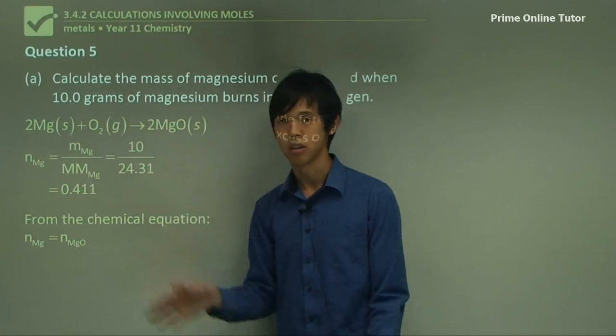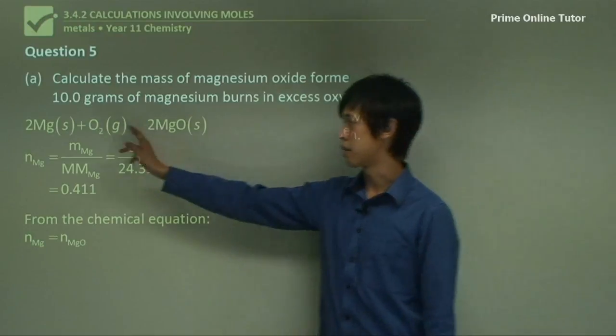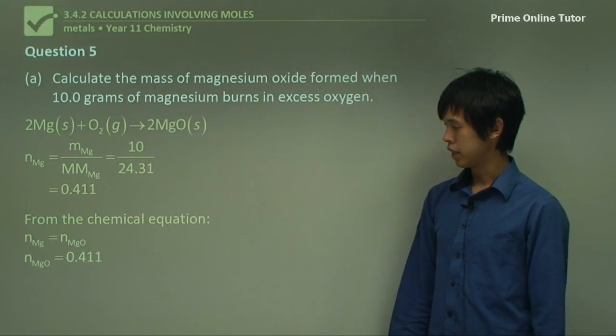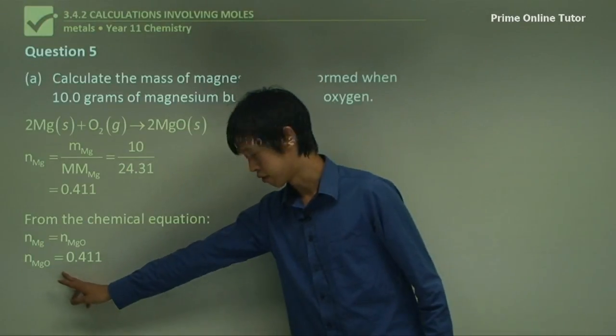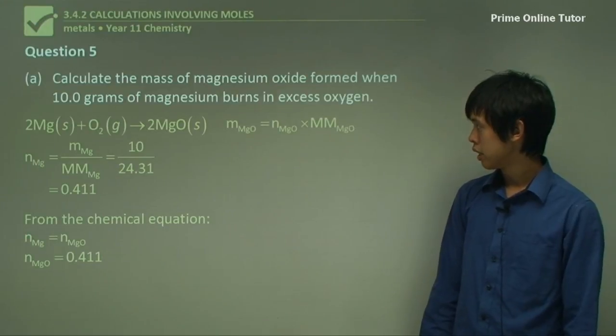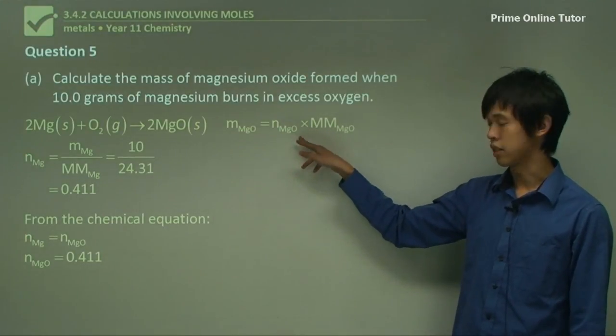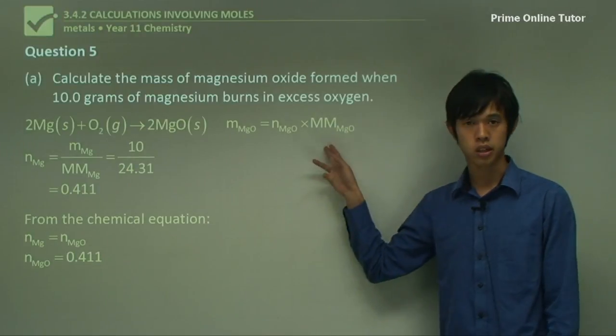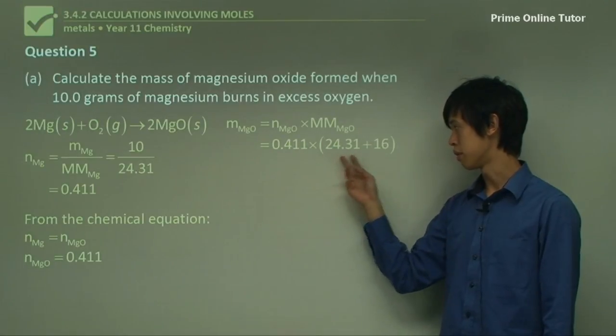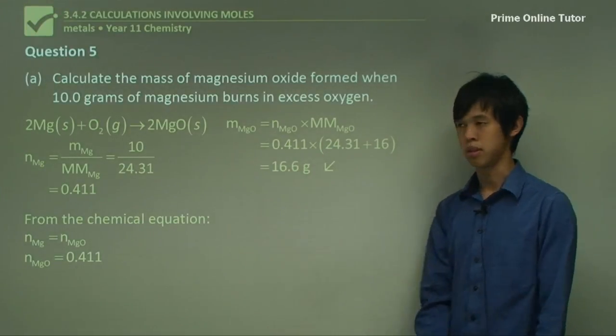So the number of moles of magnesium oxide is 0.411, just like the number of moles of magnesium. And so the mass of the magnesium oxide is just the number of moles of magnesium oxide times the molar mass of the magnesium oxide, which is 0.411 times 24.31 plus 16, which is 16.6 grams.